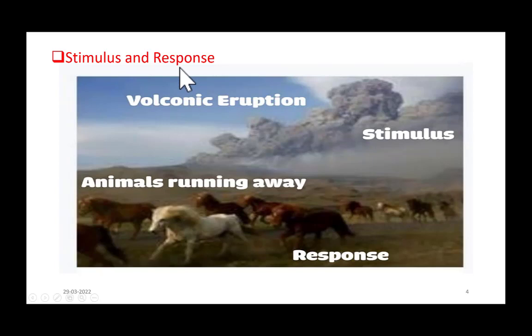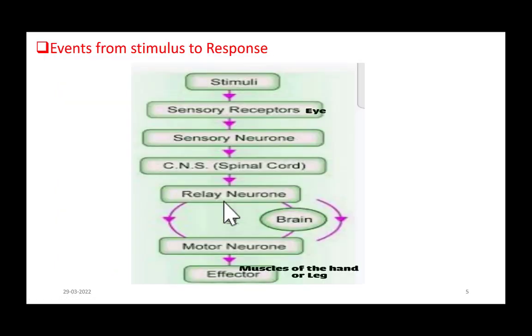Between stimulus and response, various events take place inside the body of an organism. Let us understand what are those events. Changes in environment like volcanic eruption is a stimulus. Sense organs like eye receive this information, this is then passed to spinal cord through sensory neurons. Spinal cord processes this information and sends commands to the effector through relay neurons and motor neurons. What are effectors? Effectors are those which cause movement. In case of horse, they are the muscles of the leg. And in case of sharpening a pencil, it is the muscles of the hand.